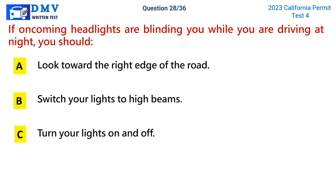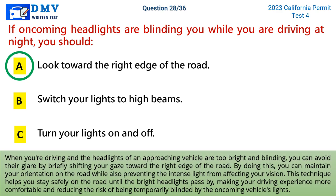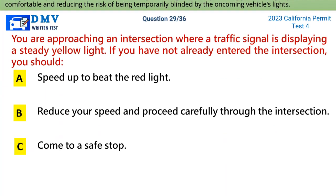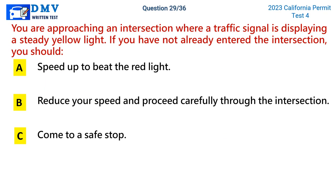Question 28: If oncoming headlights are blinding you while driving at night, you should. A) look toward the right edge of the road, B) switch your lights to high beams, C) turn your lights on and off. The correct answer is A. When headlights of an approaching vehicle are too bright and blinding, avoid their glare by briefly shifting your gaze toward the right edge of the road. This allows you to maintain your orientation on the road while preventing the intense light from affecting your vision, keeping you safely on the road until the bright headlights pass.